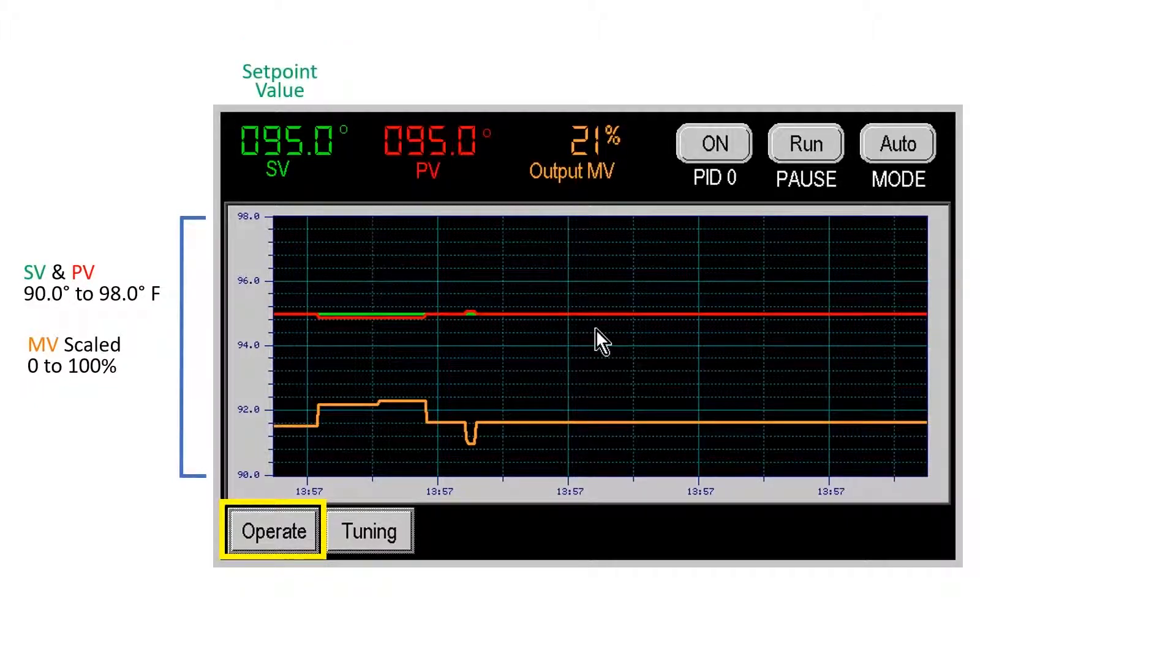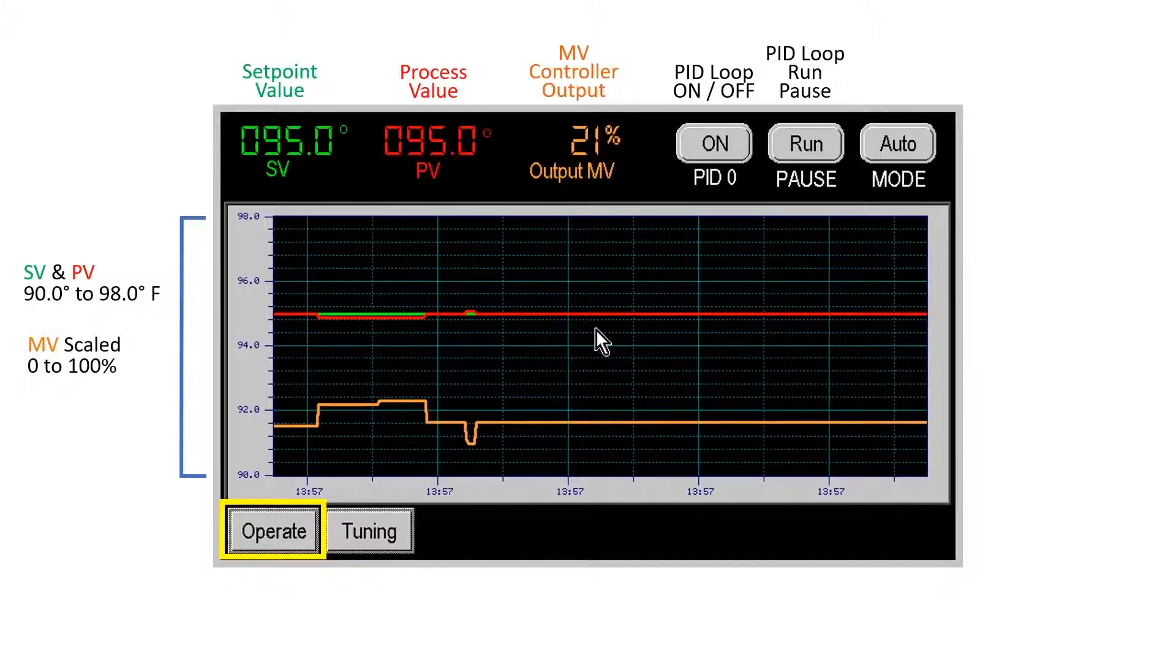The screen objects are: Set point value entry and display, Process value display, MV controller output, PID on/off control (this enables and disables the PID loop), the PID run/pause control, and the auto/manual control.